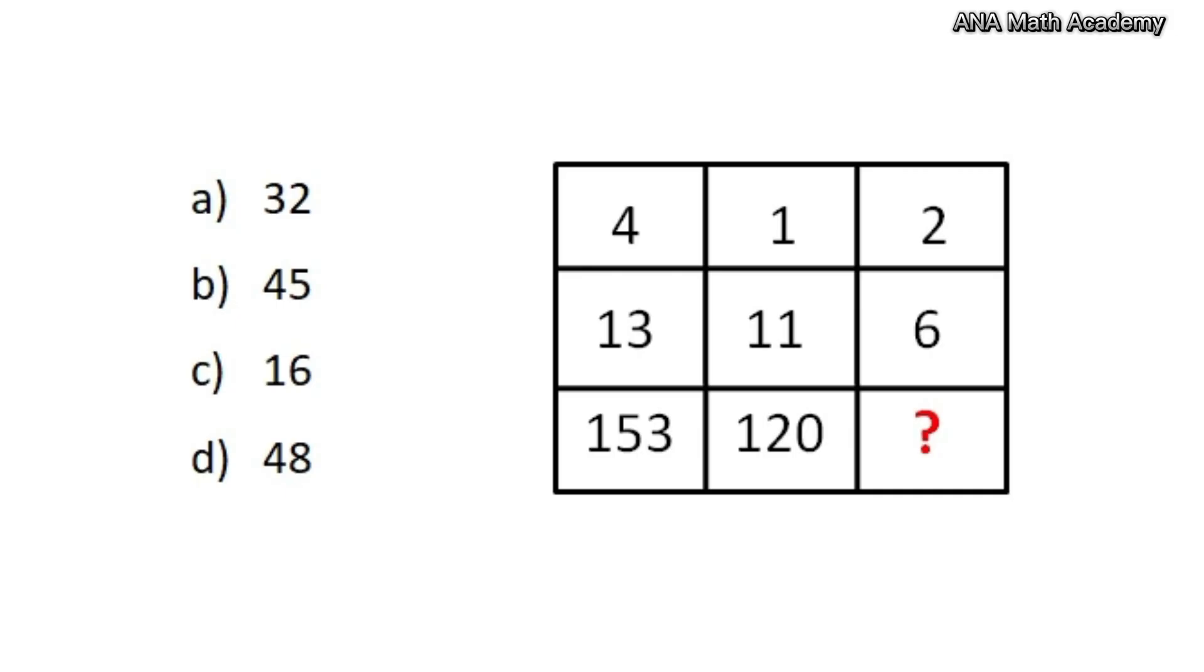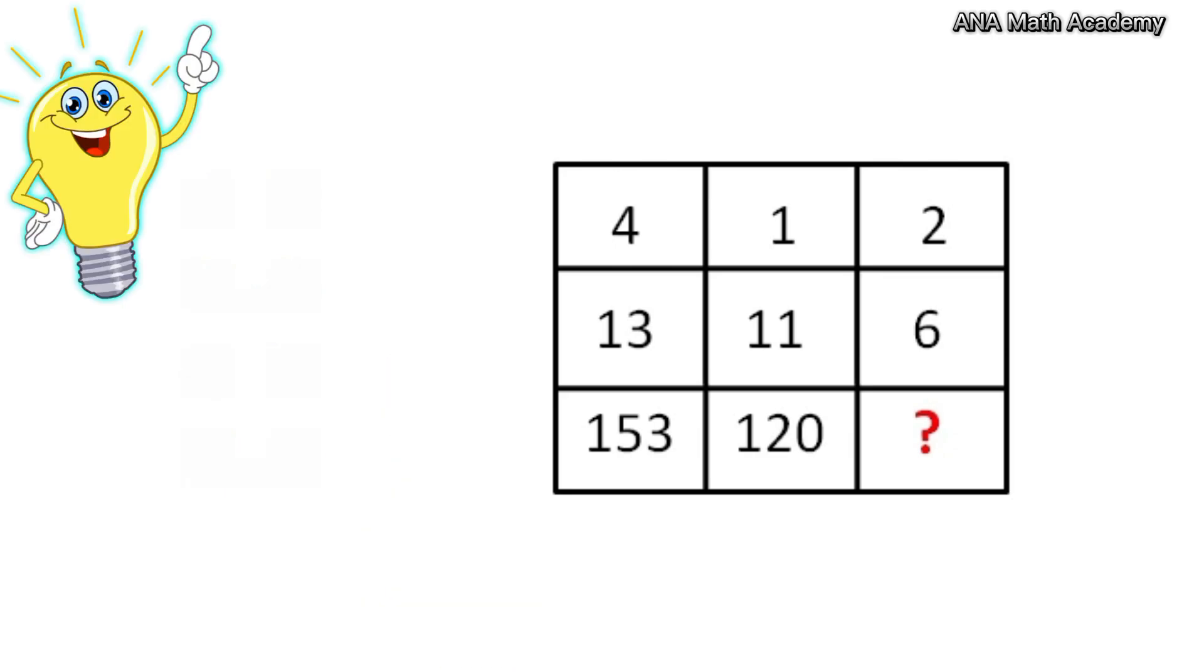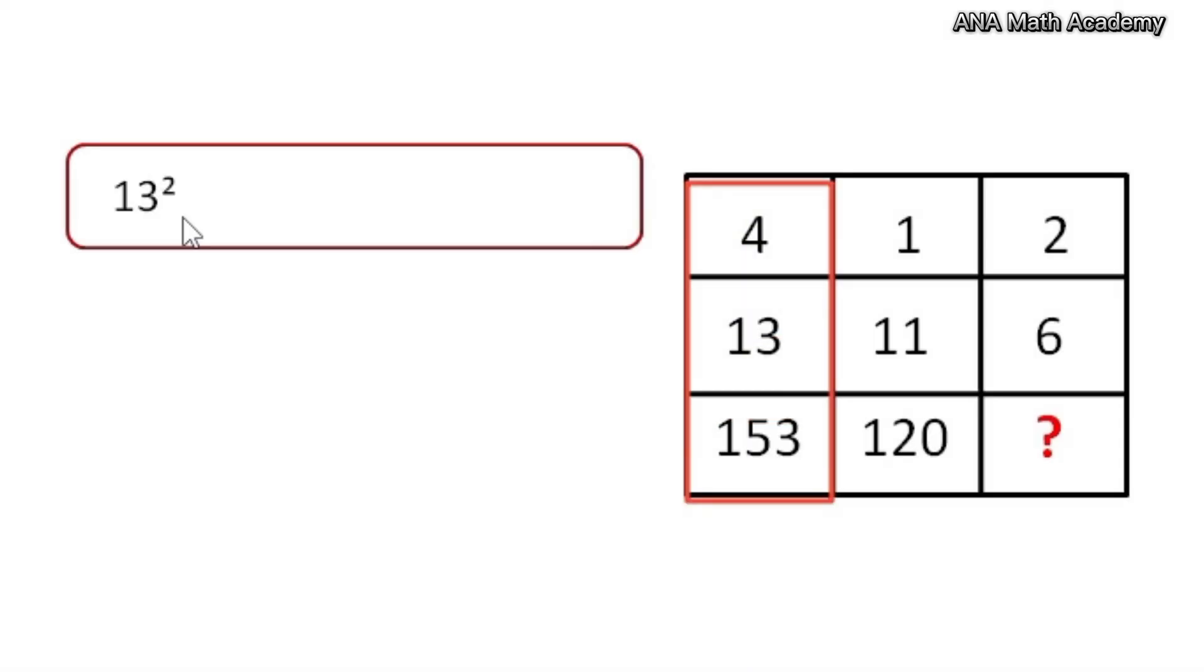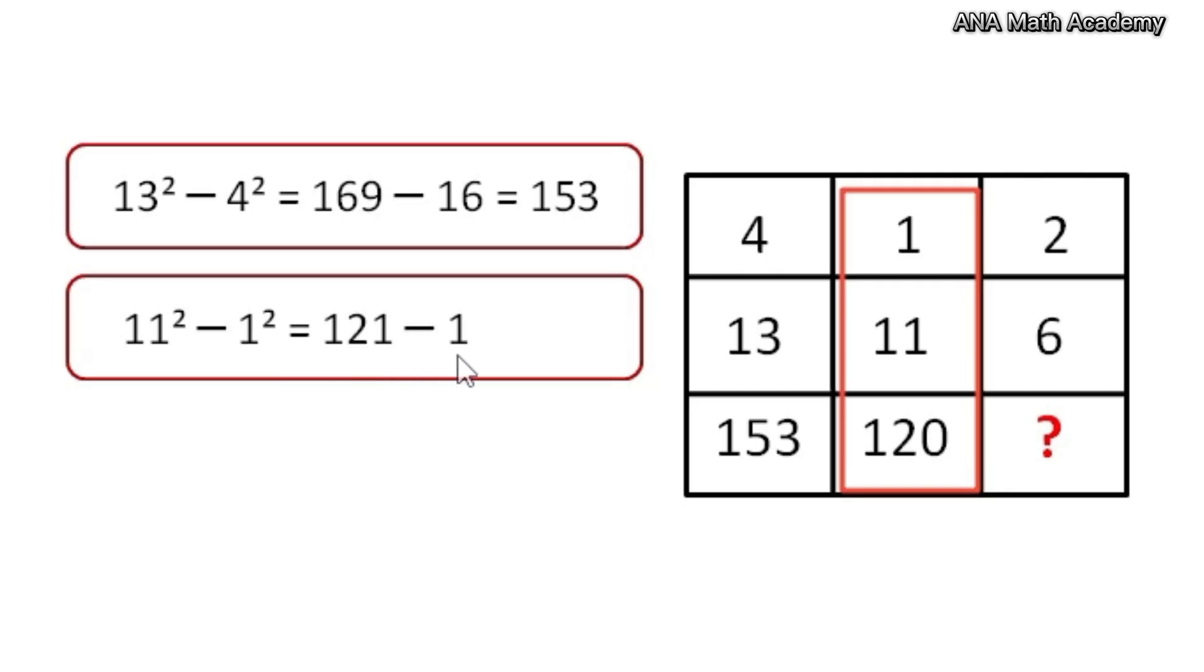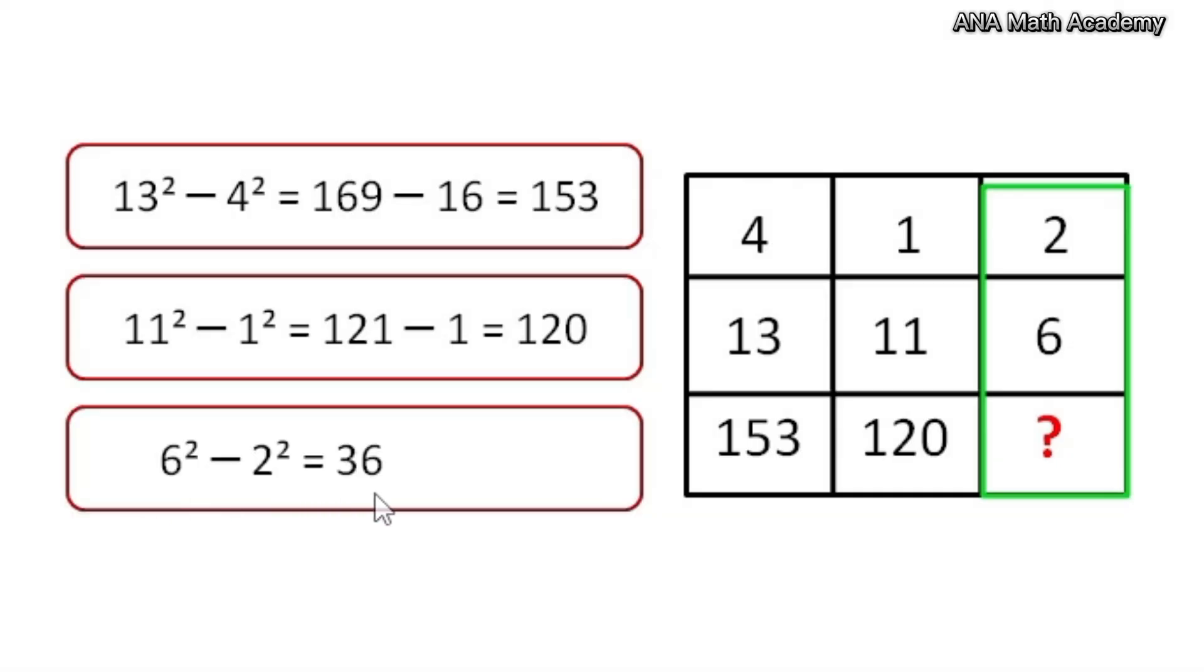Now let's move on to the third question. Oh, this is also easy, you can solve it and your time starts now. Time's up, but I'm sure you all nailed it because you are brilliant. Let's reveal the answer. Here, 13 square minus 4 square equals 153. 11 square minus 1 square equals 120. We will apply the same pattern also here: 6 square minus 2 square equals 32. So our answer is 32.